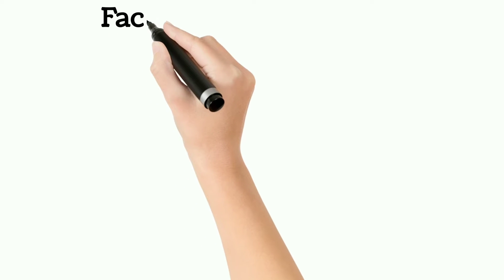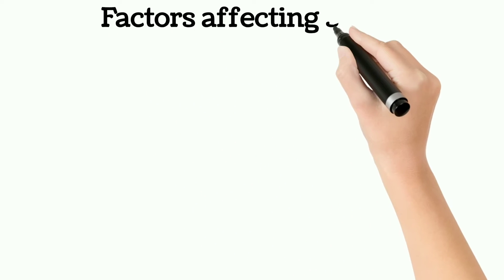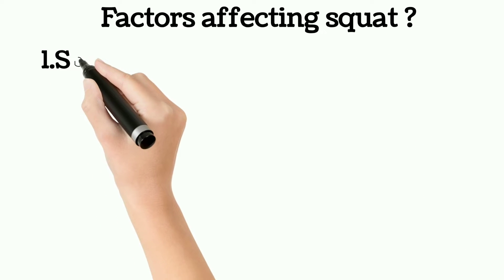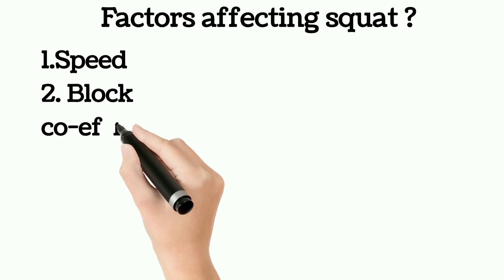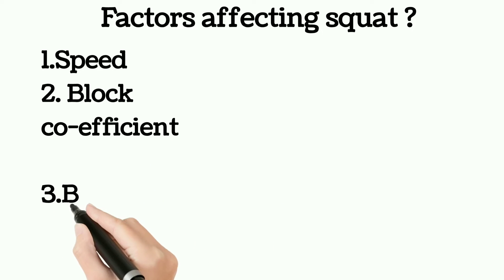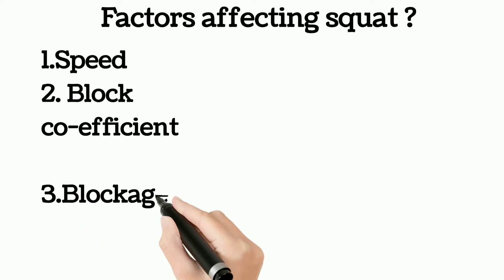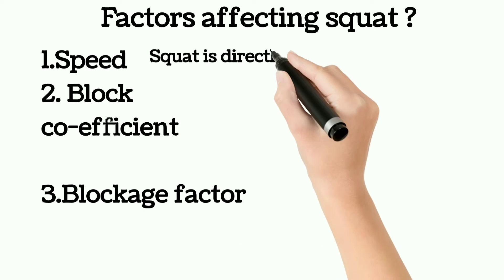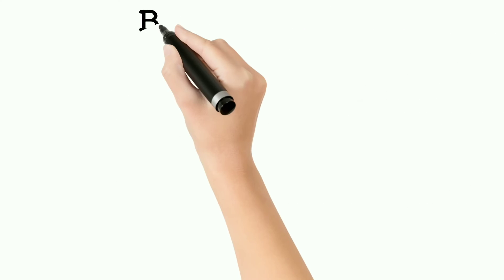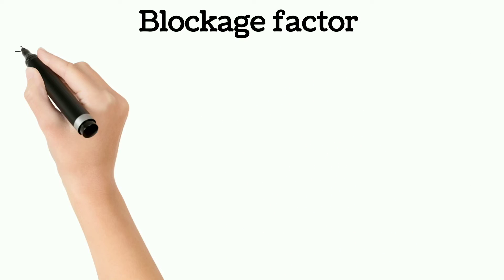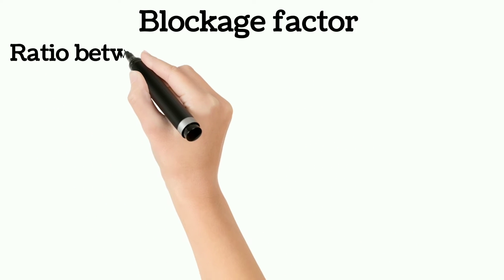Now we will see the factors affecting squat. Basically there are three factors: the speed of the vessel, the block coefficient of the ship, and the blockage factor. Speed: the squat is directly proportional to the square of the speed. Squat is directly proportional to the block coefficient. Now, what is blockage factor?